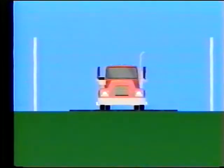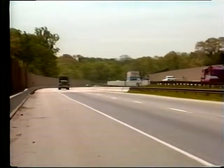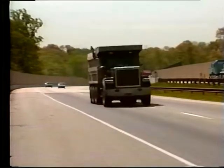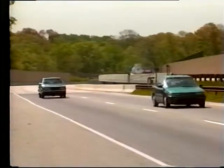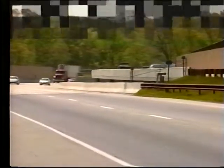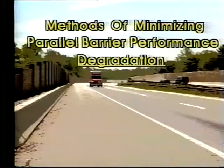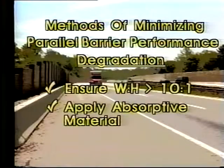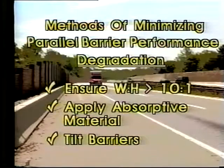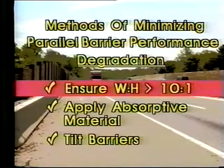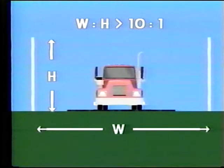What happens when barriers are present on both sides of the highway? Sound reflected between reflective barriers may cause degradations in each barrier's performance anywhere from 2 to as much as 6 dBA. In other words, a single barrier with an insertion loss of 10 dBA may only realize an effective reduction of 4 to 8 dBA if another barrier is placed parallel to it on the opposite side of the highway. Fortunately, the problems caused by both single and parallel barriers can be minimized. For parallel barriers, ensure that the distance between the two barriers is at least 10 times their average height — a 10-to-1 width-to-height ratio will result in an imperceptible degradation in performance.